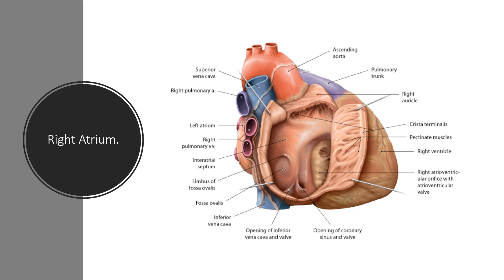The right atrium receives deoxygenated blood via the superior vena cava, inferior vena cava, and coronary sinus, entering the posterior side of the right atrium. It contains pectinate muscles and the fossa ovalis, the remnant of the foramen ovale.